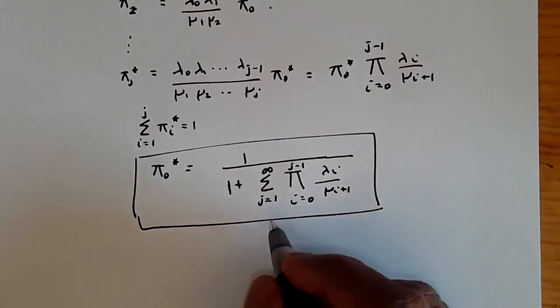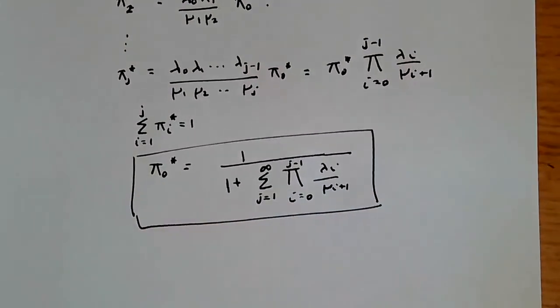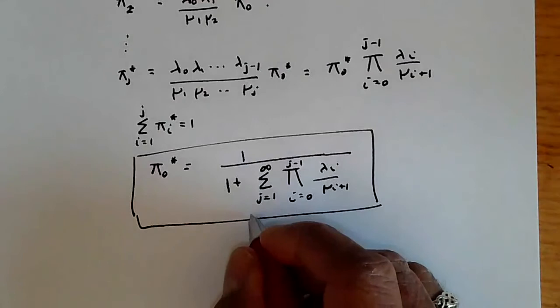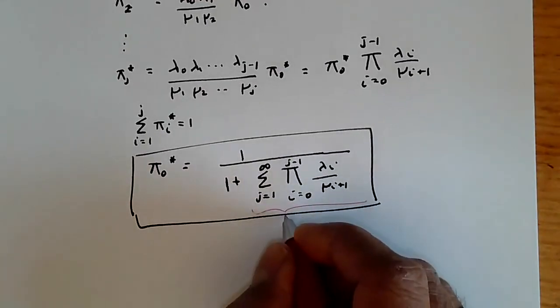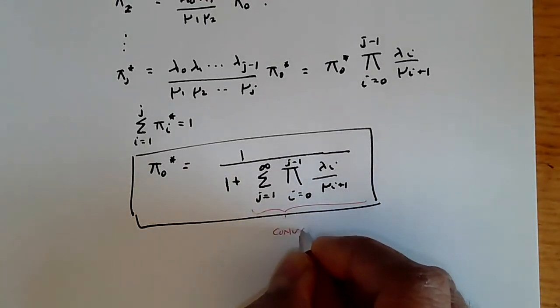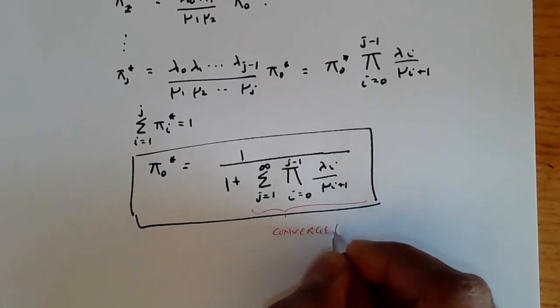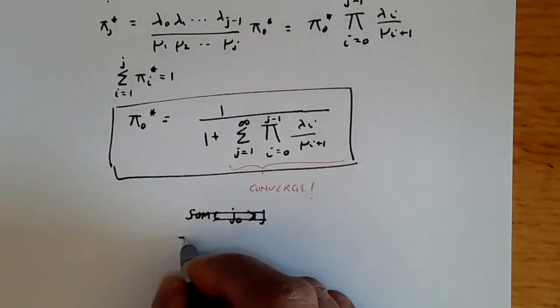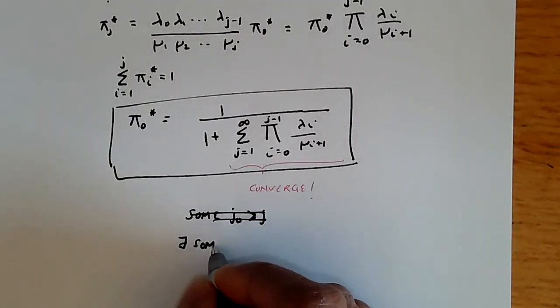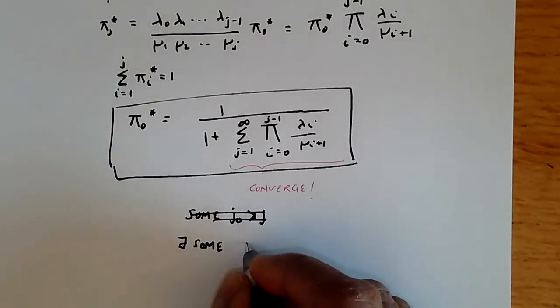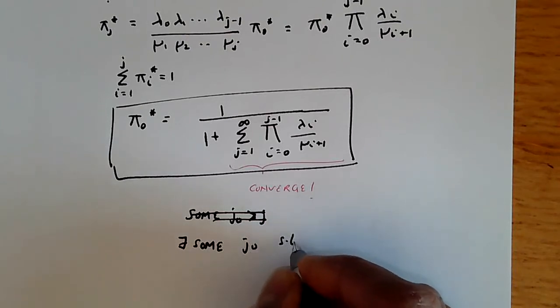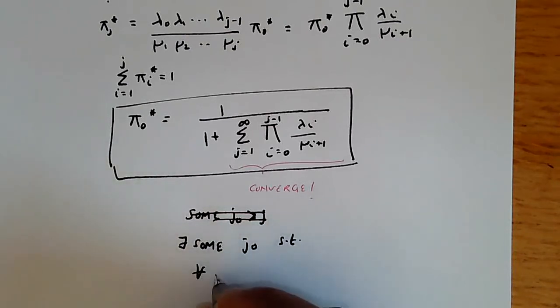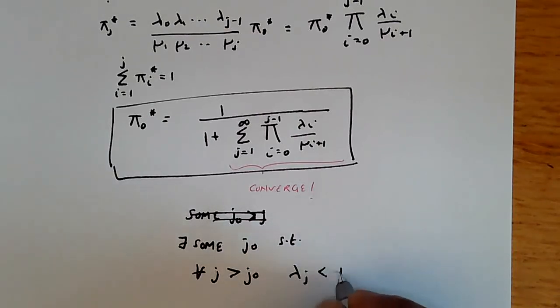Now, one thing to watch out for is that this bottom sum is an infinite sum and you have to make sure that it converges. If it doesn't converge, then of course we have a problem because then we don't have the right values. There must exist some j₀ such that for all j > j₀, λⱼ < μⱼ.